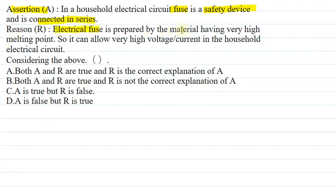Reason: Electrical fuse is prepared by a material having high melting point. So it can allow very high voltage or current in the household electric circuits.